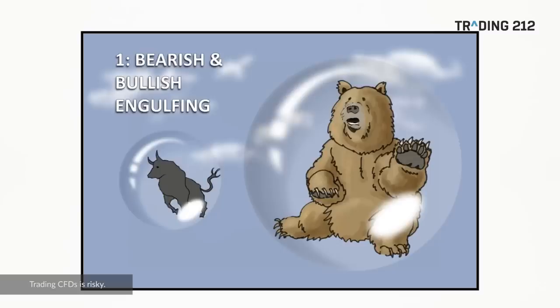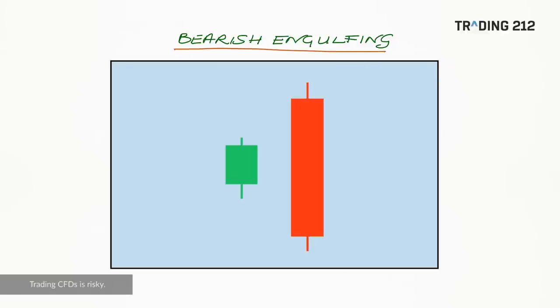Pattern number one: bearish and bullish engulfing. What defines it as engulfing is all about the size of the candlestick bodies of the two candlesticks — we're not concerning ourselves with the size of the wicks, also known as the shadows. We're purely looking at the comparison between the sizes of the two candlestick bodies. For the bearish engulfing pattern, we're looking for a green candlestick followed by a red candlestick where the body of the second red candle is larger than the first green one and completely engulfs it. That is, the open and the close of that green candle lies within the open-close range of the second candle.